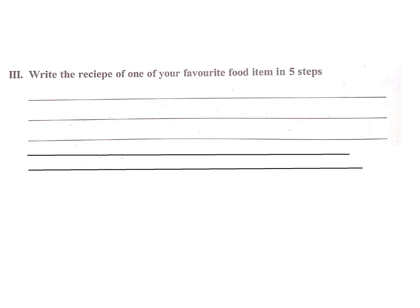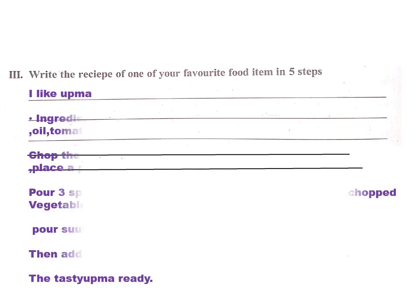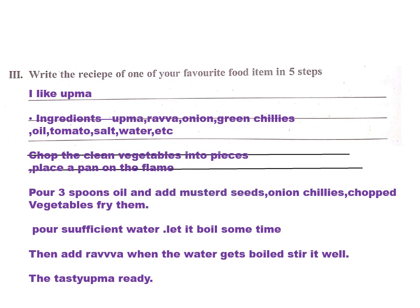Write the recipe of one of your favorite food items in five steps. My favorite recipe is Upma, that's why I wrote about Upma. Ingredients: Upma rava, onion, green chillies, oil, tomato, salt, water, etc.